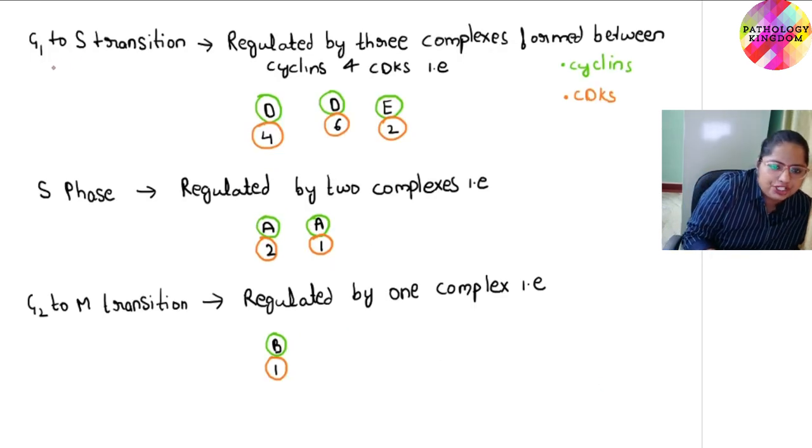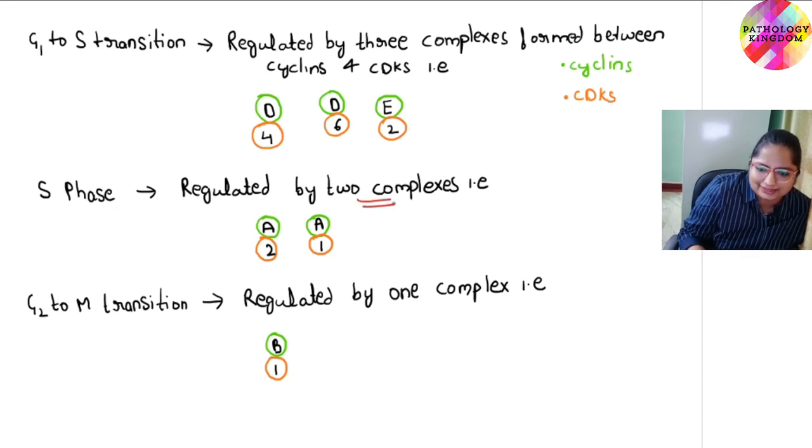For G1 to S transition, it is regulated by three complexes formed between cyclins and CDKs: Cyclin D and CDK4, Cyclin D and CDK6, Cyclin E and CDK2. For S phase, it is regulated by two complexes: Cyclin A with CDK2 and CDK1. For G2 to M transition, it is regulated by one complex: Cyclin B and CDK1.